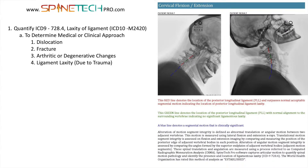Ligament laxity is ICD-9 728.4, but will be M2420 when the ICD-10s take effect. There are a couple reasons you're going to want to do this. The first is to determine the medical or clinical approach to treatment. Four things can cause ligament laxity: dislocation, fracture, arthritic or degenerative changes, or what we most commonly see in practice — ligament laxity secondary to trauma.